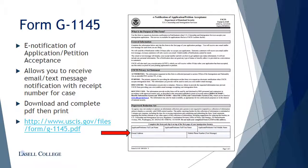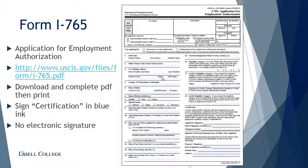The next document you need to complete is Form G-1145, the E-Notification of Application/Petition Acceptance. This form allows you to receive an email or text message notification with your receipt number when your application is received by USCIS. You can follow the link to the form from the OPT checklist. Download, complete, and print the form. Your signature is required on the application — do not provide an electronic signature. You should sign and date the application in blue ink after you have completed and printed the form.